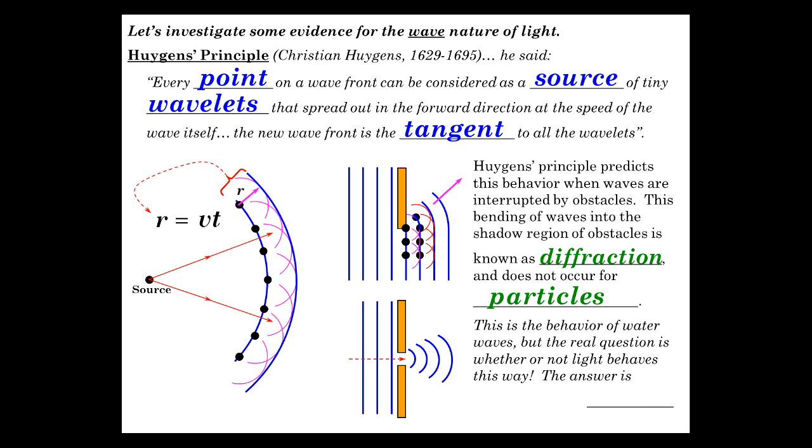So here we have a barrier, a little opening here, and this energy getting through. And you've seen how that occurs with water waves before. So the real question is whether or not light actually behaves that way. And you probably can guess the answer. Yes, it is. So we're going to look at that a little more.